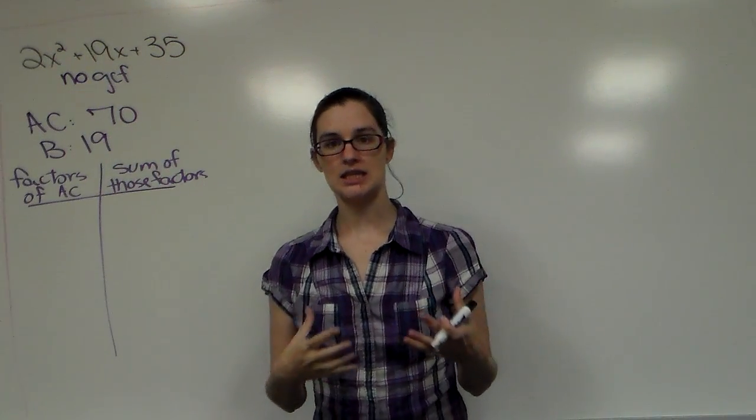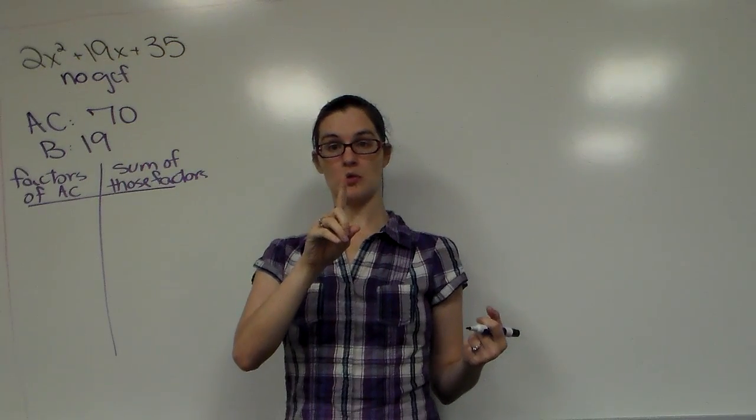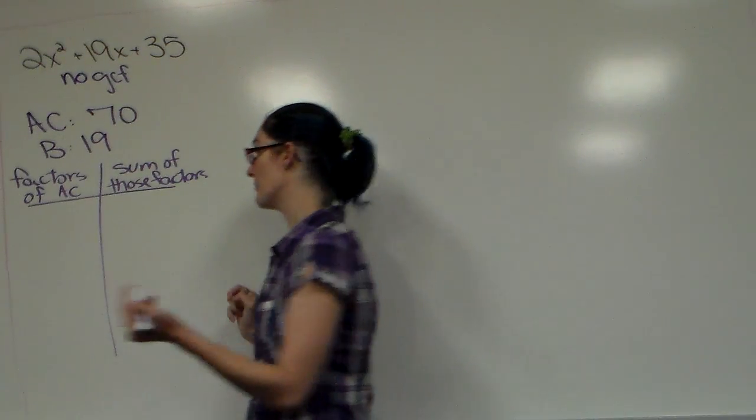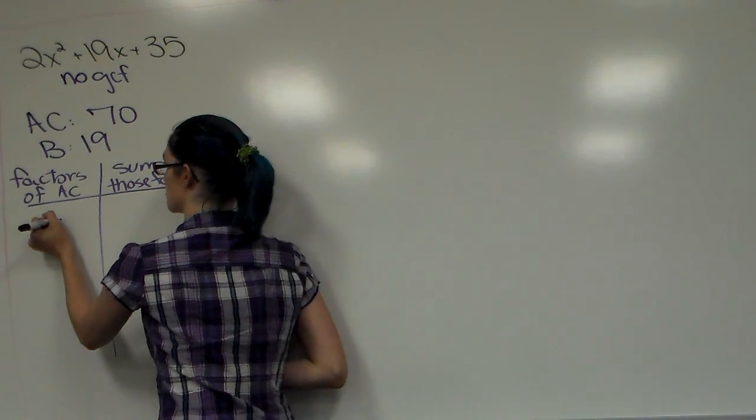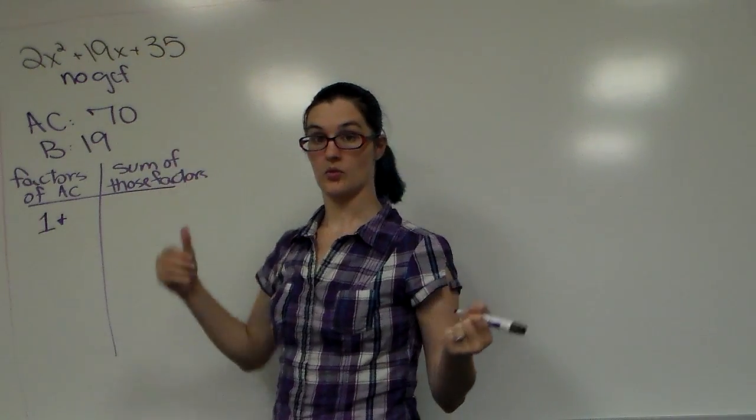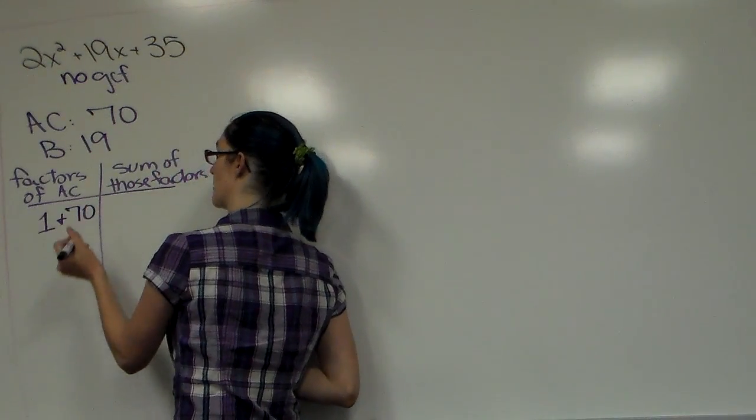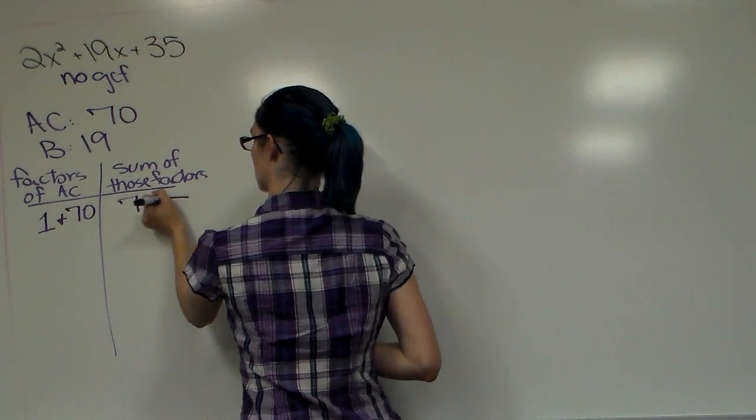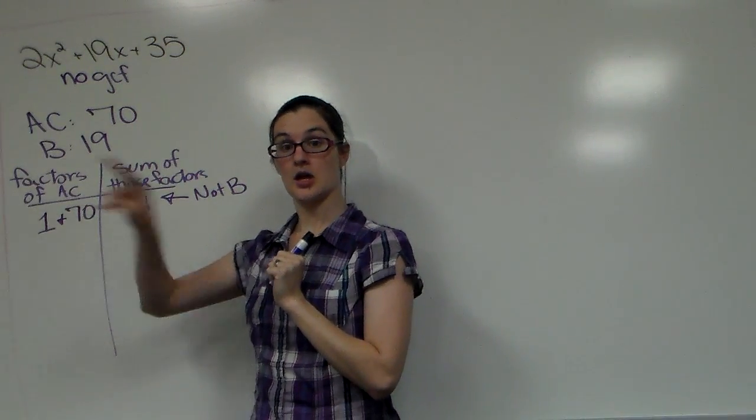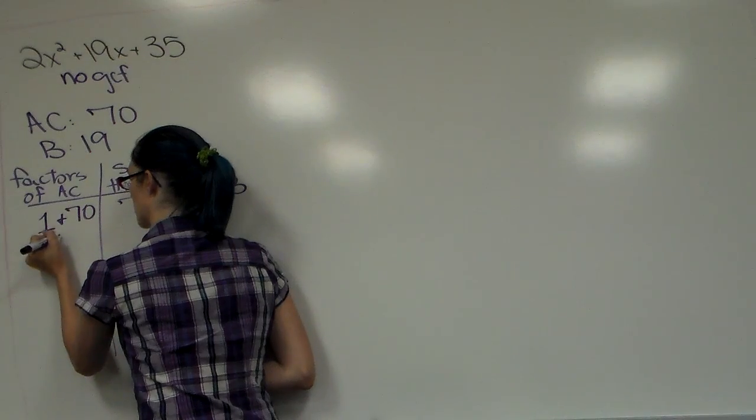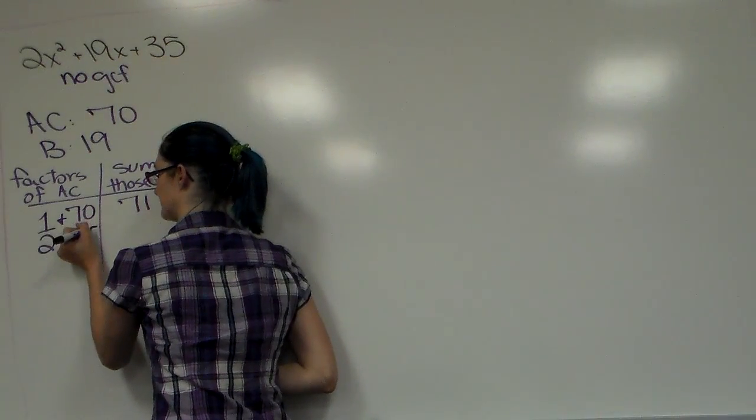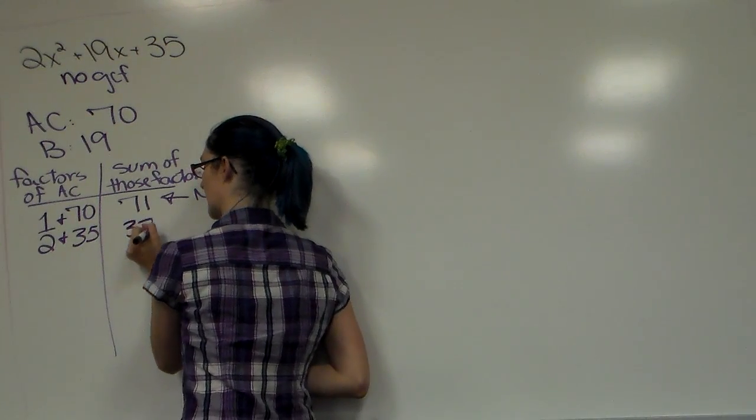One way to do this chart to keep everything consistent is I'm going to start with the number 1 every time, forever and always without fail. That's going to make sure if it happens to be prime you know. We have the number 1, and you ask yourself 1 and what number make a positive 70 when you multiply? 1 times 70, right? If I add them together, 1 plus 70 gives me 71. That is not B. Try number 2. 2 times what number gives us 70? 2 times 35. If I add those together I get 37.